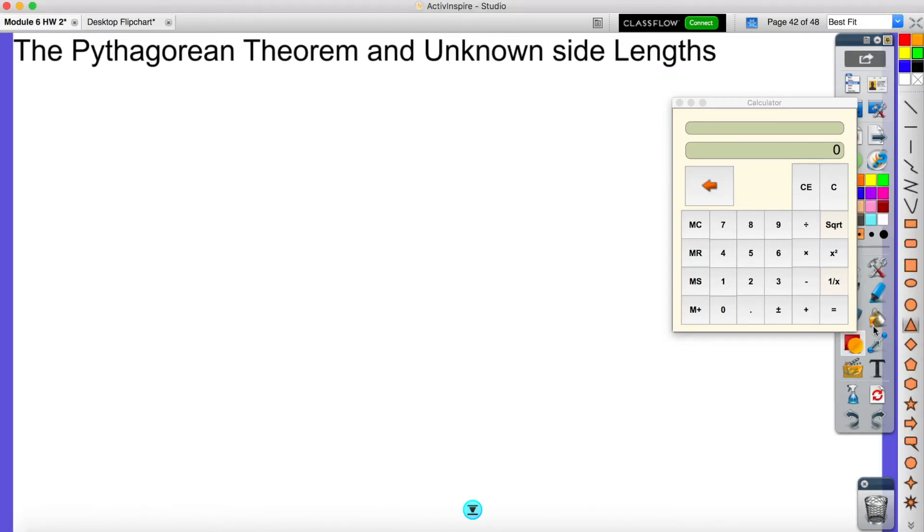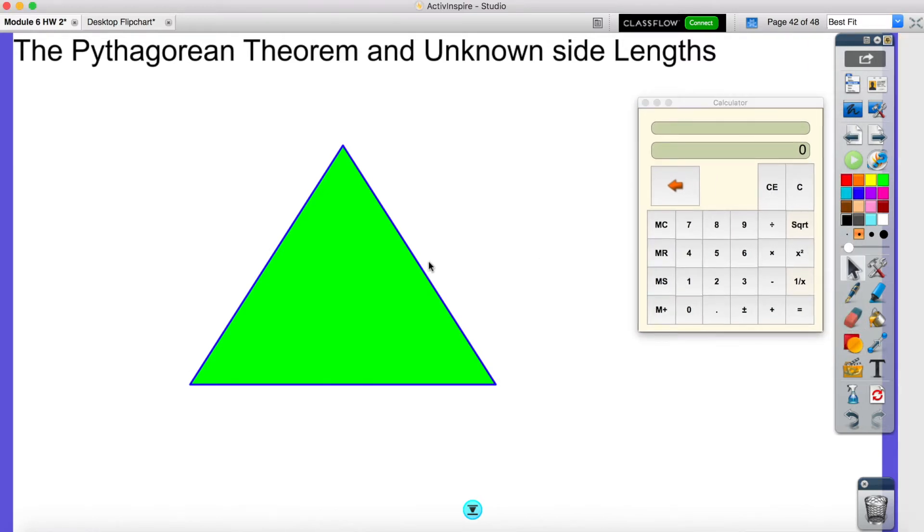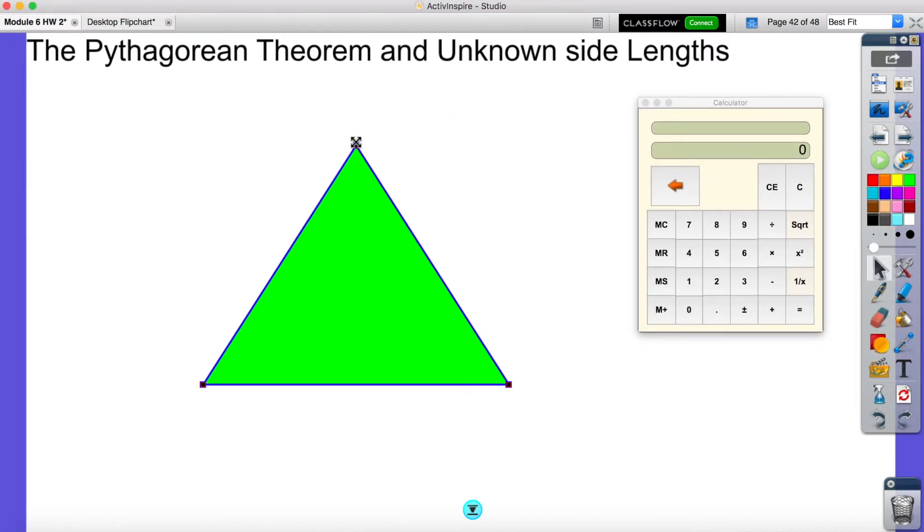The Pythagorean Theorem is an equation to find a missing side of a right triangle. So if here's my triangle, let me turn it into a right triangle really quickly. We use it to find missing sides, and we label these as A, B, and C.